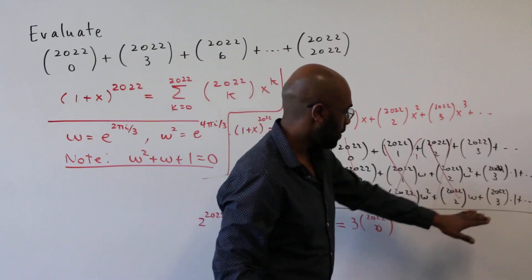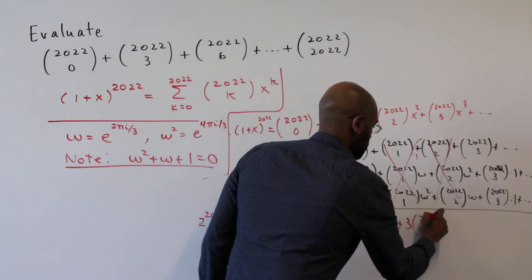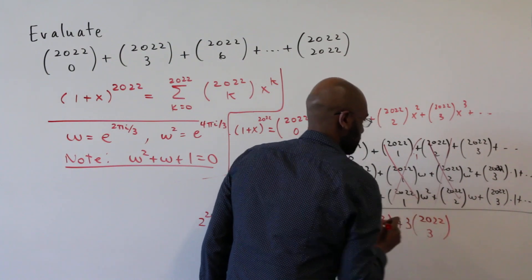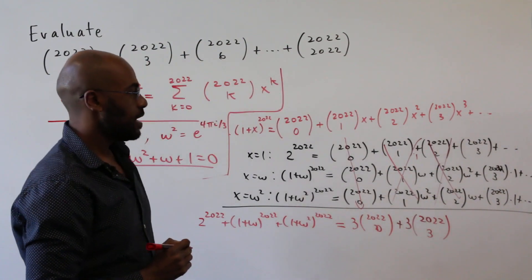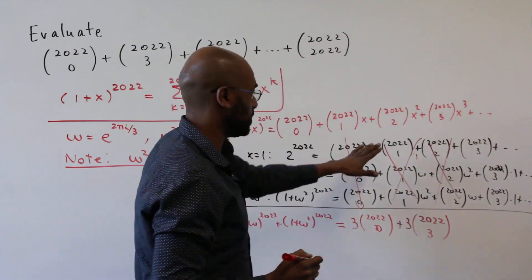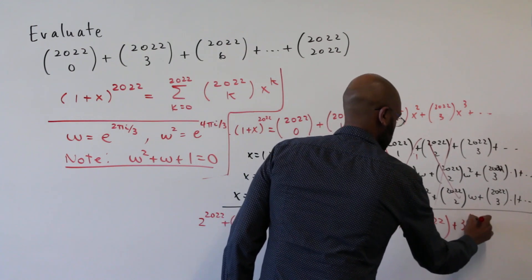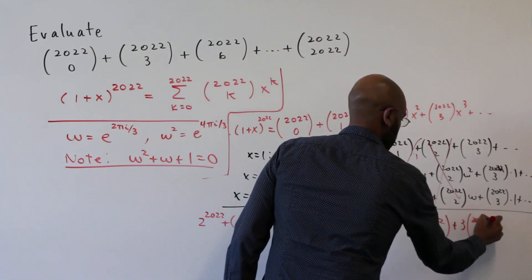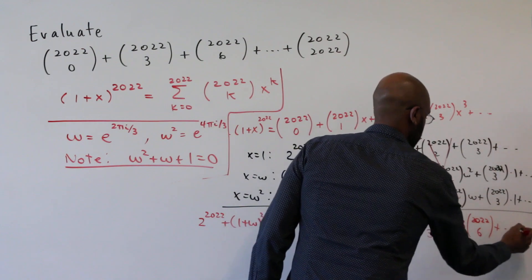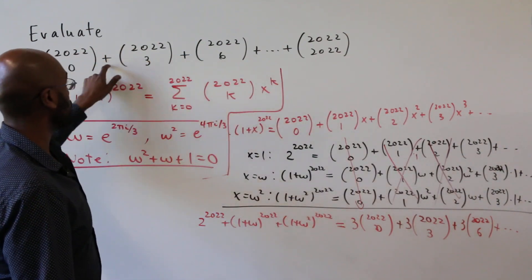And then now we have three copies of 2022 choose three. And then for the 2022 choose four contribution, we'll get a zero again by the same thing here, another zero, and then we'll get three times 2022 choose six, etc.